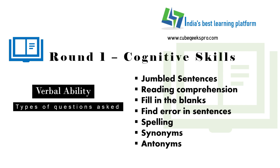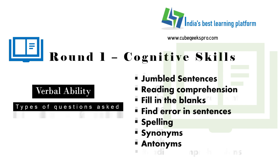In spelling questions, if there is a spelling mistake in a sentence or word, you have to identify which word has the spelling mistake and choose the correct option. For standalone synonyms and antonym questions, you will get individual words and need to find their synonym or antonym. That covers all the types of questions asked in the verbal ability section.